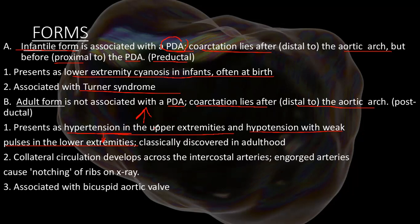Whenever you measure the blood pressure of a patient and find it elevated in the upper extremities but very low in the lower extremities, you want to suspect aortic coarctation. Please differentiate between Takayasu arteritis and aortic coarctation: in aortic coarctation there will be hypertension in the upper extremities and hypotension in the lower extremities. In Takayasu arteritis — a large vessel granulomatous vasculitis — the pressure will be more elevated in the lower limbs.